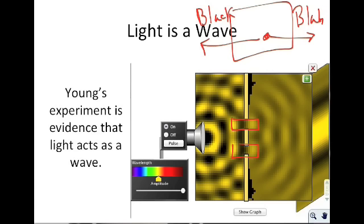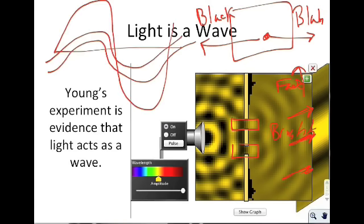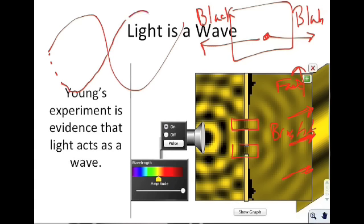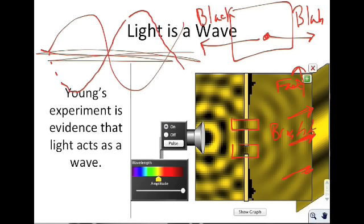But if you use a flashlight from the exact same source timed just right, you get this pattern: a bright spot in the middle, then black spots, then it fades out. If you have waves that go like this and you add them together, they cancel out to zero. When there is no light, that's the black spot — that's the destructive interference.